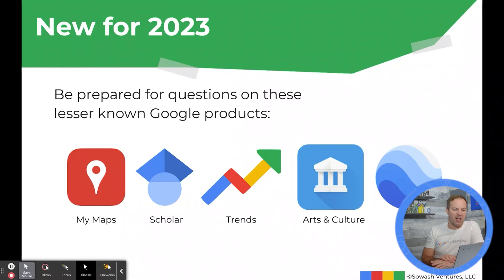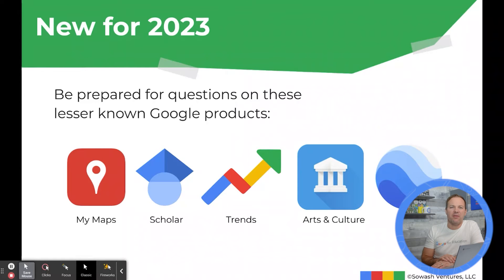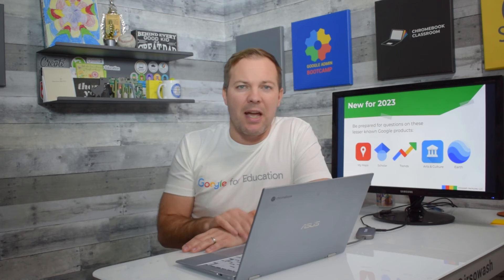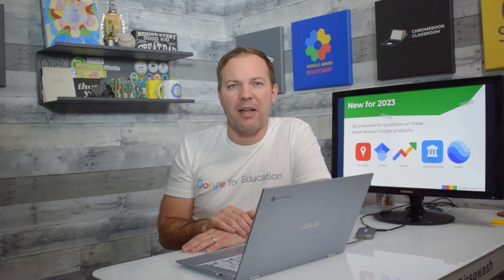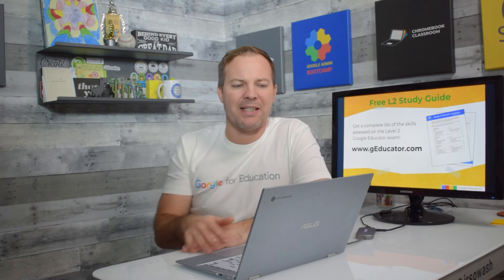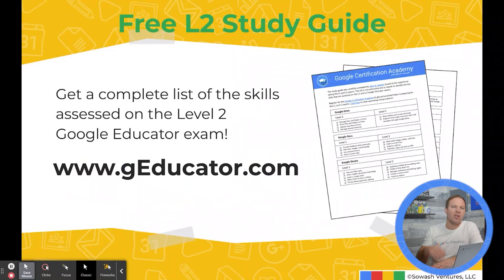Here are some of those advanced products already mentioned. If you're not familiar with Scholar, Trends, and Arts and Culture, you definitely want to brush up on them. You won't get a lot of questions on each individually, but combined you'll probably get five or six — which could be the difference between passing and failing.